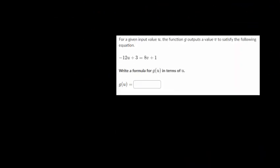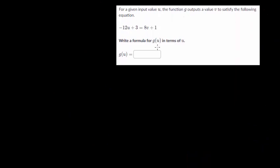Let's keep moving. This equation is in terms of both u and v, and we're asked to write a formula for g(u) in terms of u. We're going to solve for the opposite variable. We will solve for v, since v is our function g, which is going to be in terms of u.